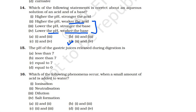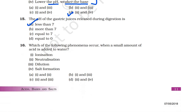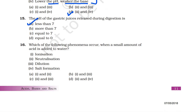Question 15: the pH of gastric juices released during digestion is less than 7, because gastric juice is acidic in nature. So less than 7 would be the answer.